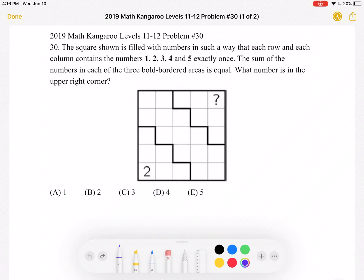This is the 2019 Math Kangaroo Levels 11-12 Problem Number 30. The square shown is filled with numbers in such a way that each row and each column contains the numbers 1, 2, 3, 4, and 5 exactly once.